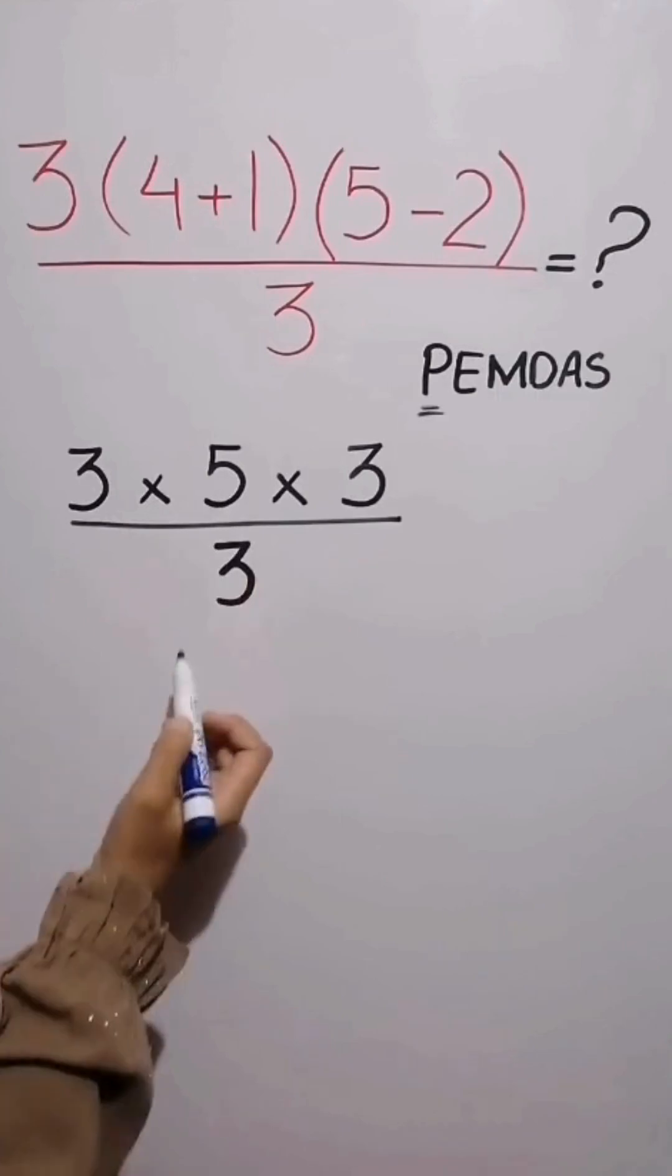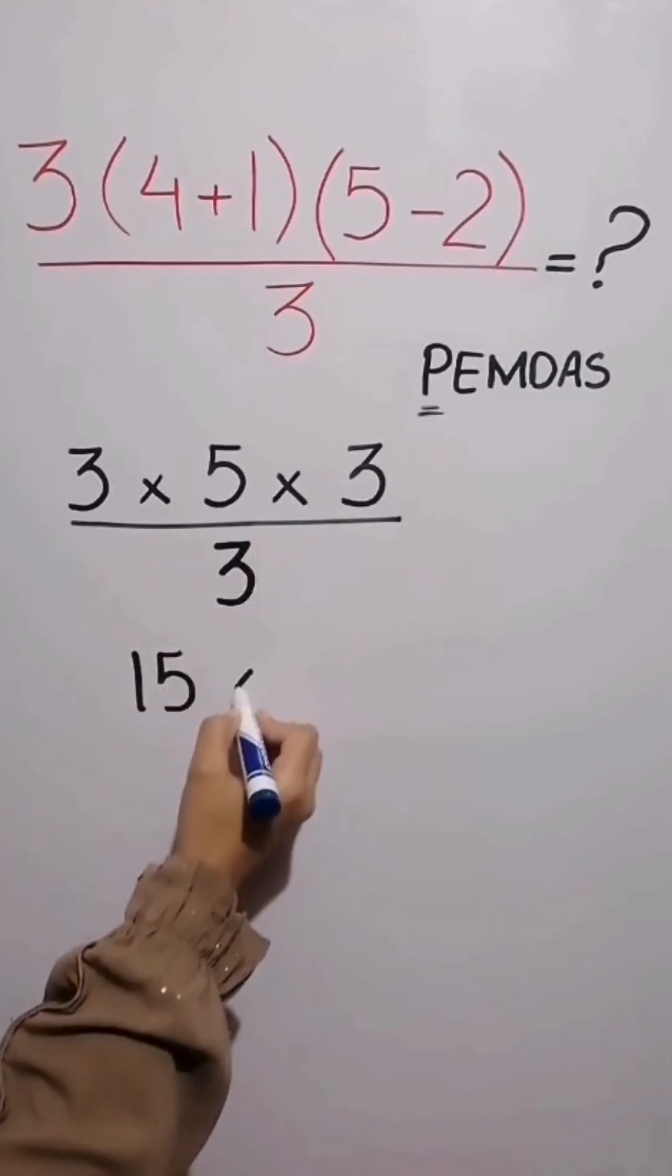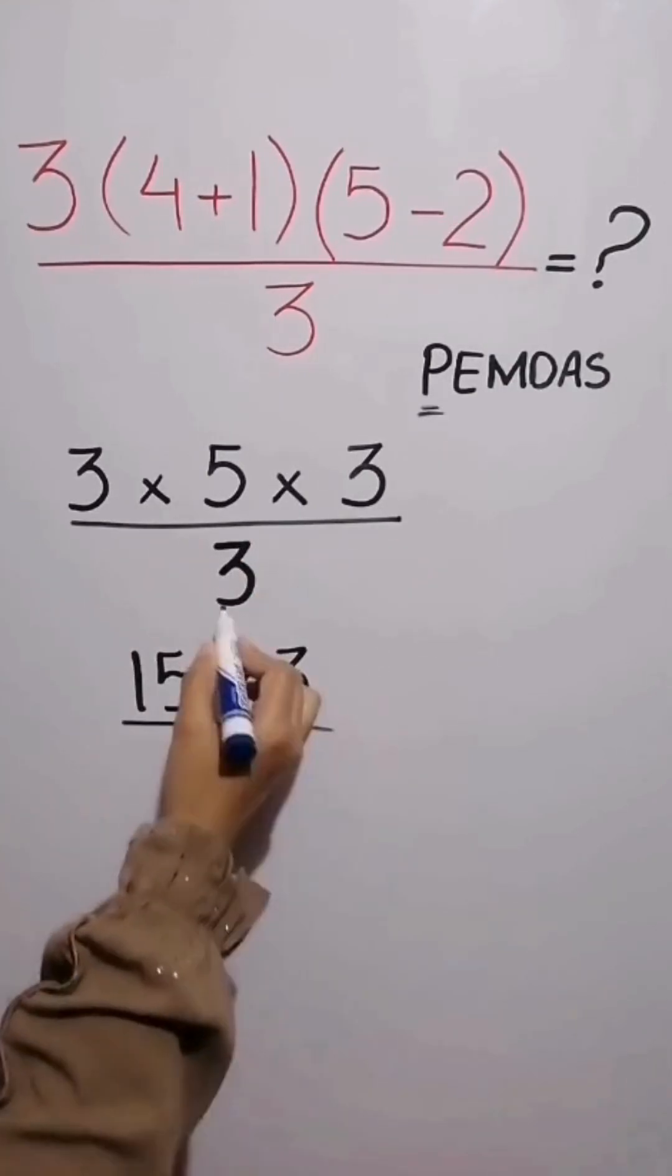3 times 5 is equal to 15. Now the expression becomes 15 times 3 over 3.